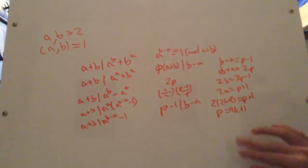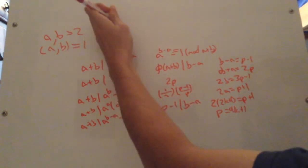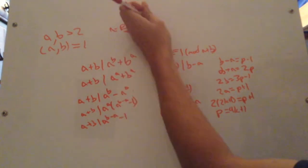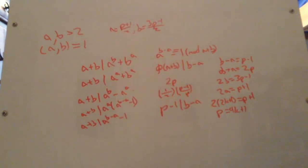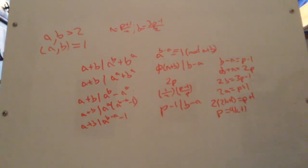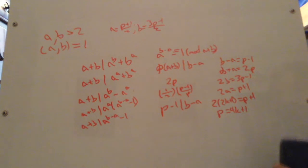So p is of this form, 4k plus 1. And if we do that, we should be able to get a solution. But let's check, go back to the beginning. So we have a now is p plus 1 over 2, and b is equal to 3p minus 1, all over 2. And p is some prime of the form 4k plus 1.